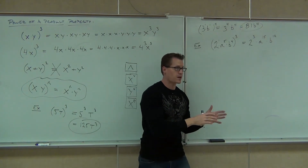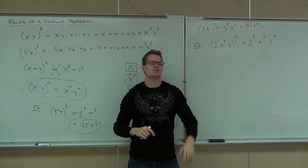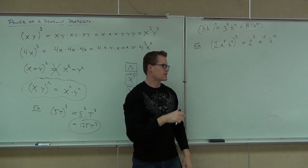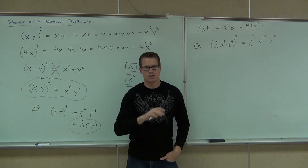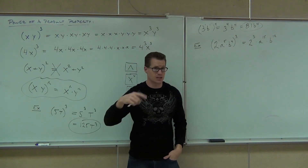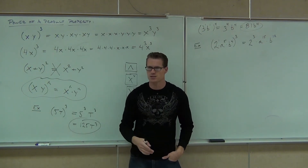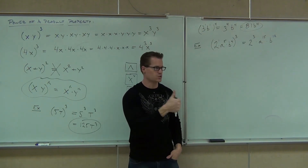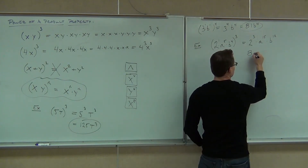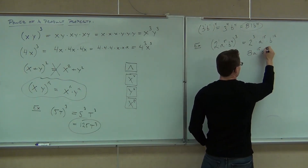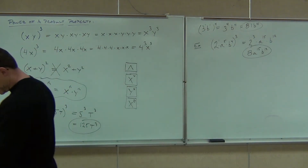That's a really important thing. Now let's start simplifying. Anything that has a number to an exponent, we can compute. So what's 2 to the 3rd? 8. Don't give me 6 — don't just multiply. We're doing 2 times 2 times 2, that's 8. Alright, that's our final answer. Try one on your own.